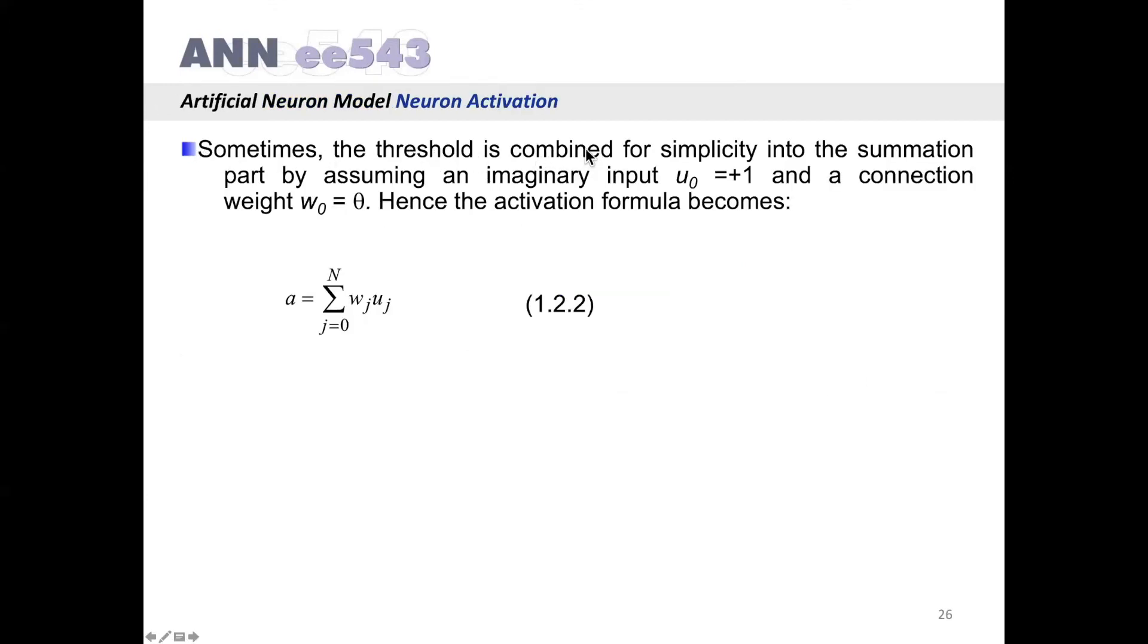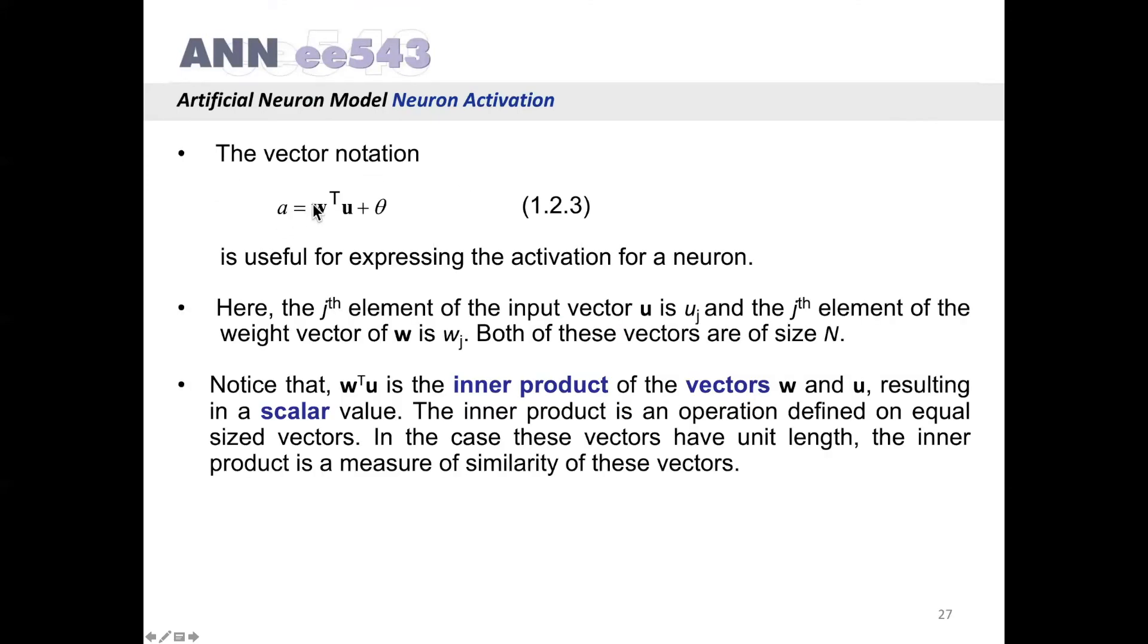Sometimes the threshold is combined for simplicity into the summation part by assuming an imaginary input u0 has a value plus 1 and a connection weight w0 equal to theta. Hence the activation formula becomes j starting from 0 up to N, wj, uj. Here when j equals 0, notice that uj, u0 equals 1 as given here and w0 equals theta. In that case, we are adding theta.